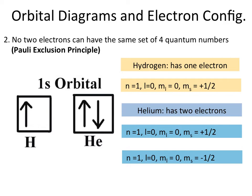No two electrons can have the same set of four quantum numbers — this is the Pauli exclusion principle. For a hydrogen atom with a single electron, the quantum numbers are n=1, l=0, m_l=0, and m_s=+1/2, which is spin up by convention. For helium, which has two electrons in the 1s orbital, all four quantum numbers are the same except m_s. The first electron is spin up (+1/2) and the second must be spin down (-1/2) to keep the quantum numbers unique.